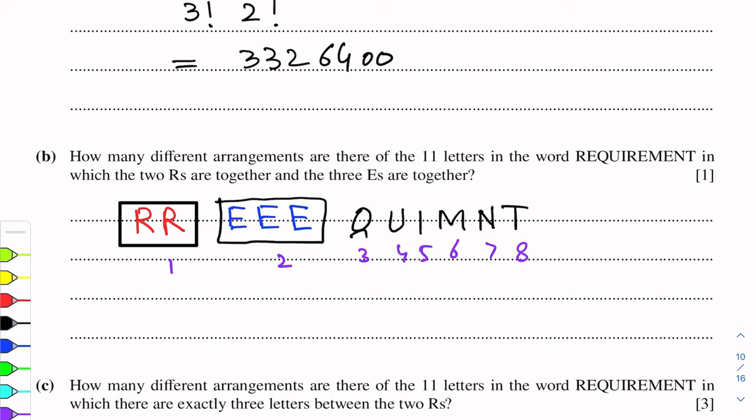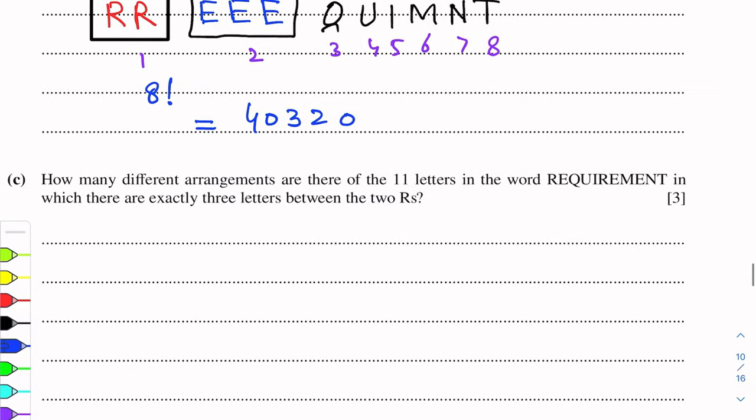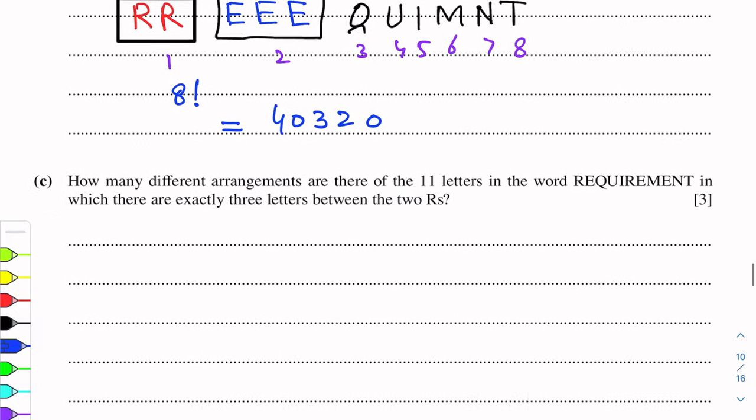The answer is 8 factorial, that will be equal to 40,320. These are the number of arrangements.